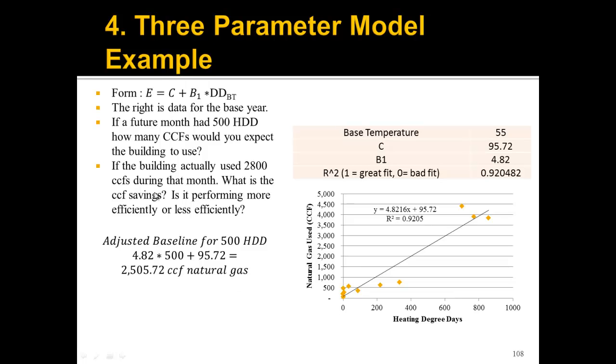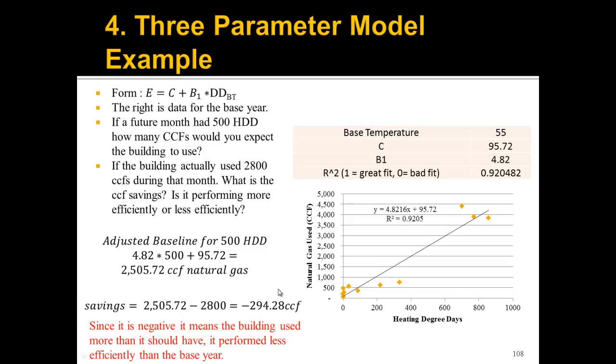If the building actually used 2,800 CCFs during that month, what is the CCF savings? Is it performing more efficiently or less efficiently? This is our adjusted baseline. But what we actually used was 2,800. Adjusted baseline is what you would have used had the building been operating exactly the same from year to year, taking into account weather differences. So what it did use is 2,800. When we calculate the savings, we actually get a negative savings. That is telling us the building used more than it should have during that period, and it performed less efficiently than the base year.